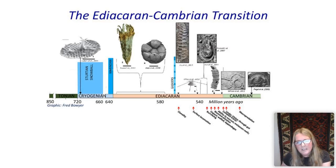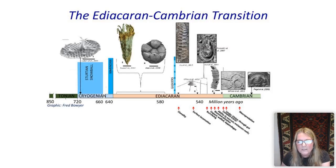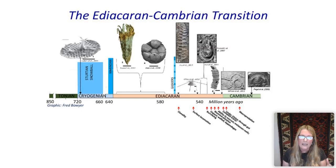If we think about the characteristics we associate with complex life, we can see that they really do build up during the Ediacaran, particularly towards the terminal Ediacaran. Many of them are occurring in the Ediacaran rather than the Cambrian. By treating these biotas as a holistic whole, and integrating soft-bodied with the skeletal with the trace fossil record, we can really start to interrogate some of the drivers for the Cambrian explosion.